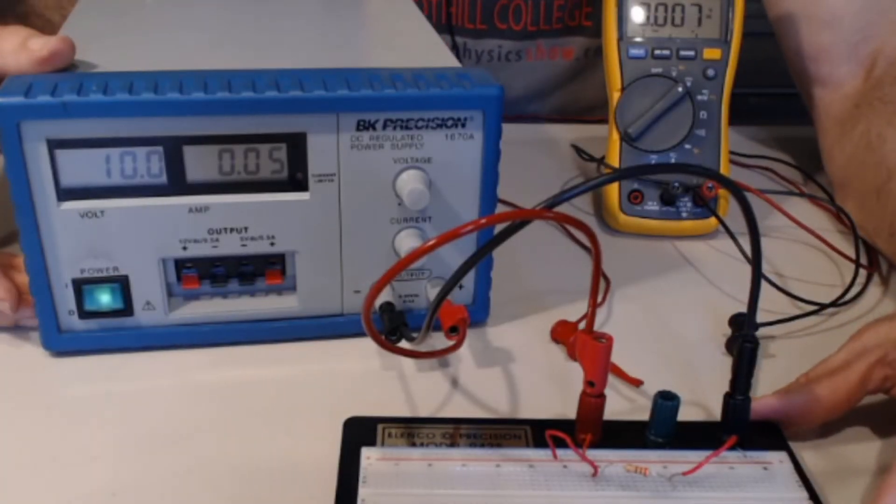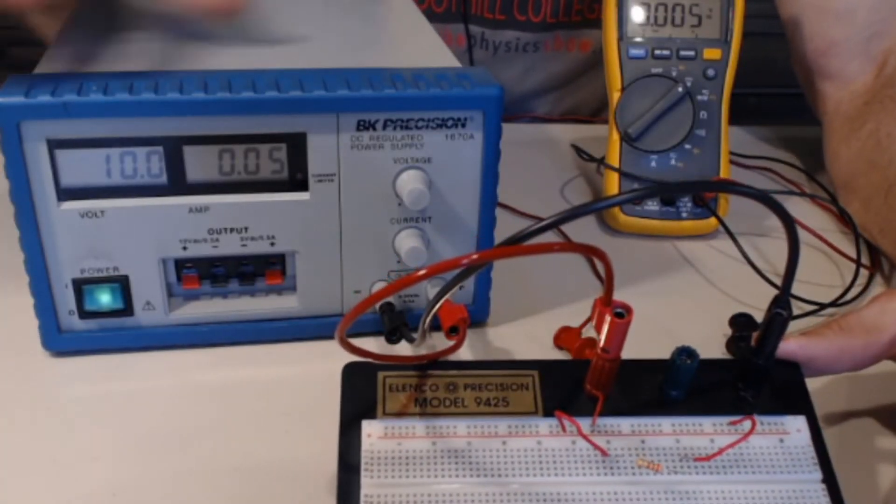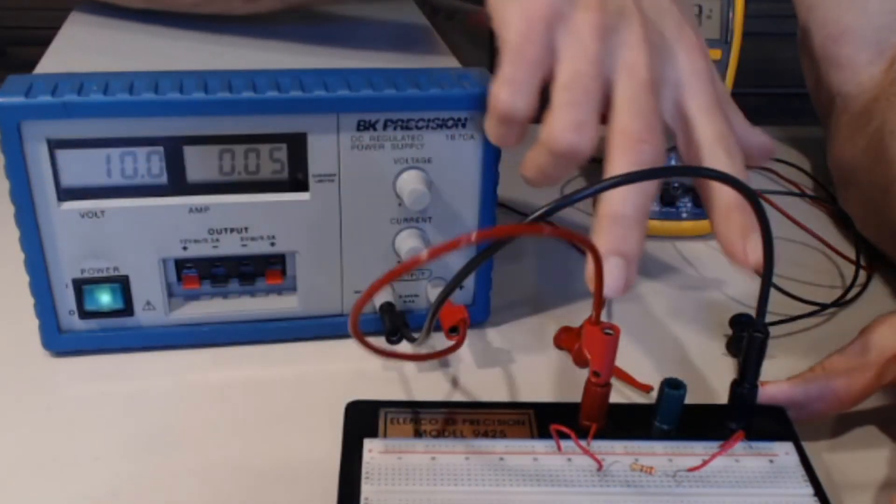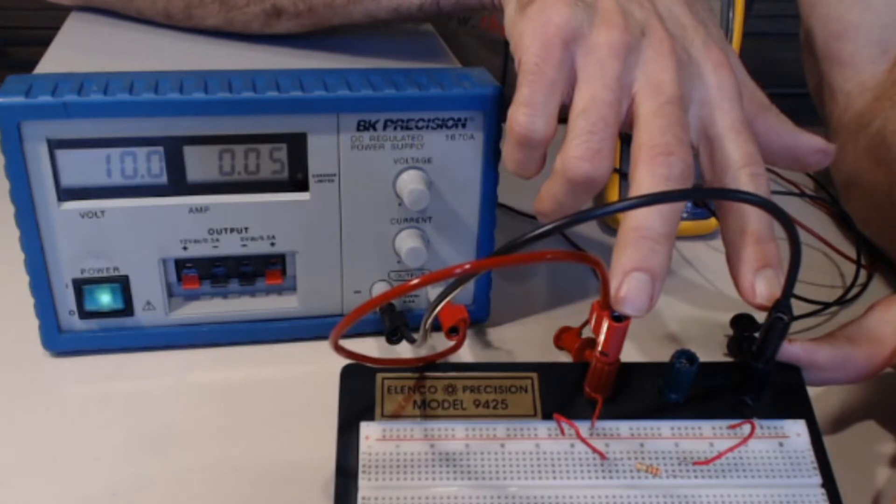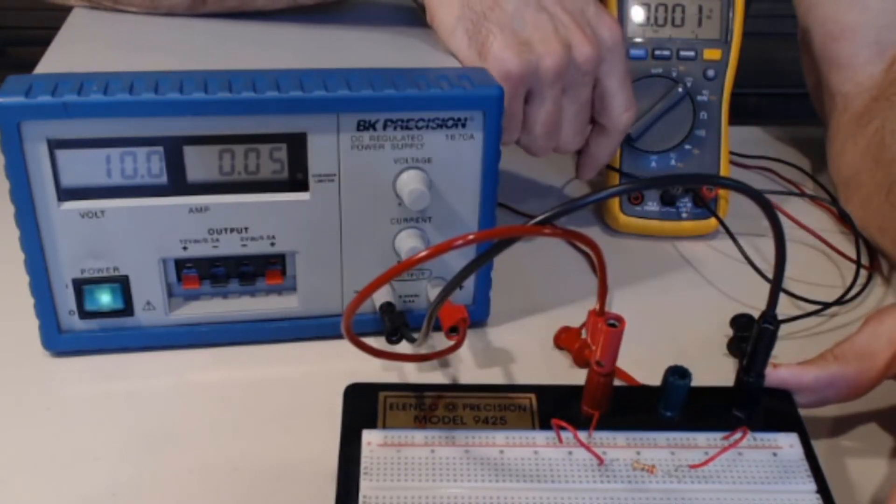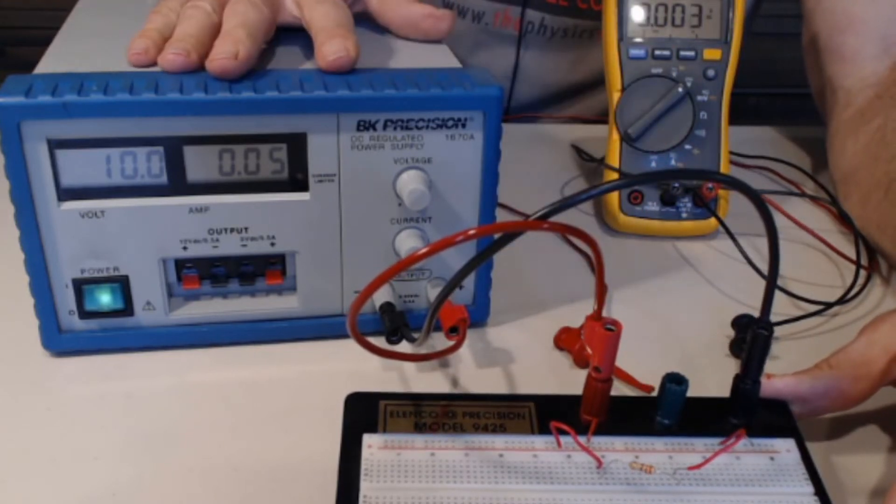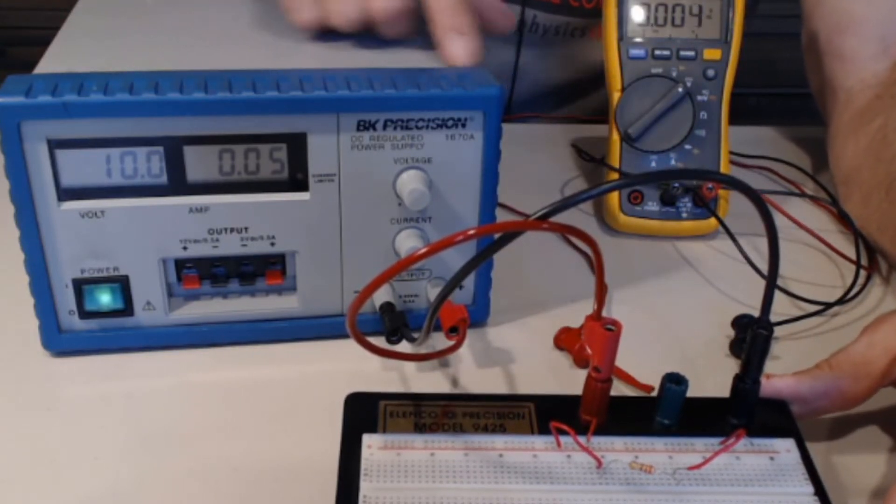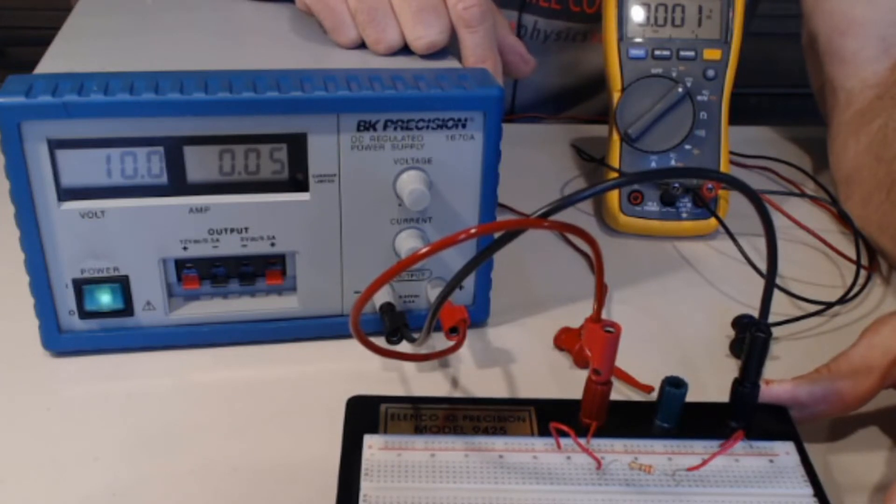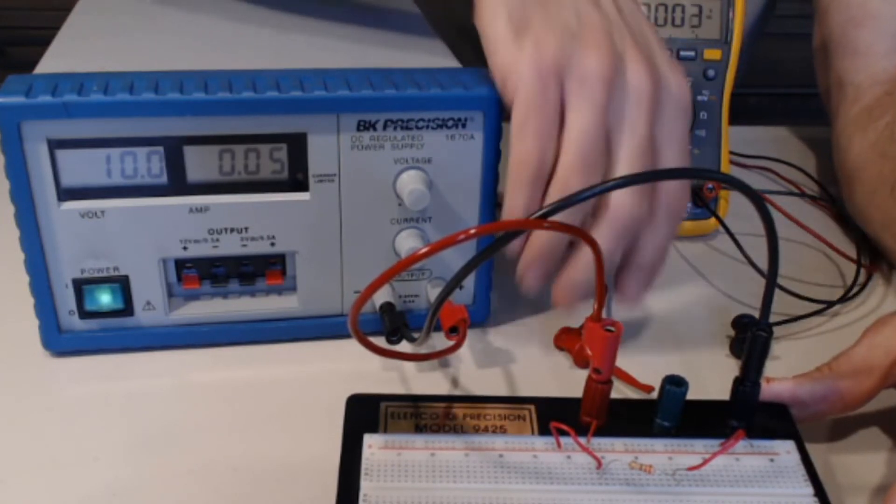Let's take a look at this simple circuit. My DC power supply is powering my breadboard. And I just have one resistor here. And so my DC power supply tells me it's putting out 10 volts and 0.05 amps, 50 milliamps.